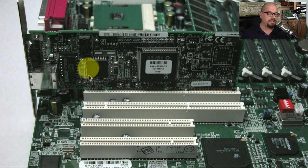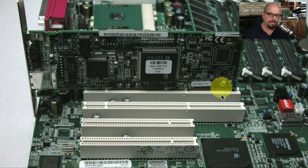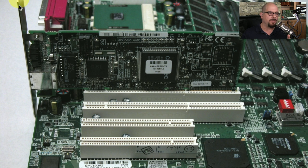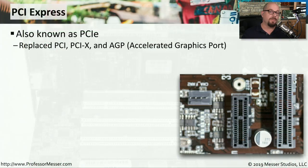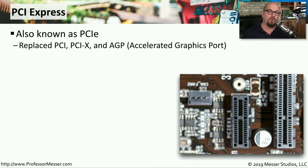Here's a PCI card now installed into the 64-bit slot. The right side appears slightly elevated because we're not in an actual case and not screwing down the top of the card. Once you do that, you'll find that the card sits very flat and completely inside the PCI slot. On most modern motherboards, you're not going to see the older PCI interface.